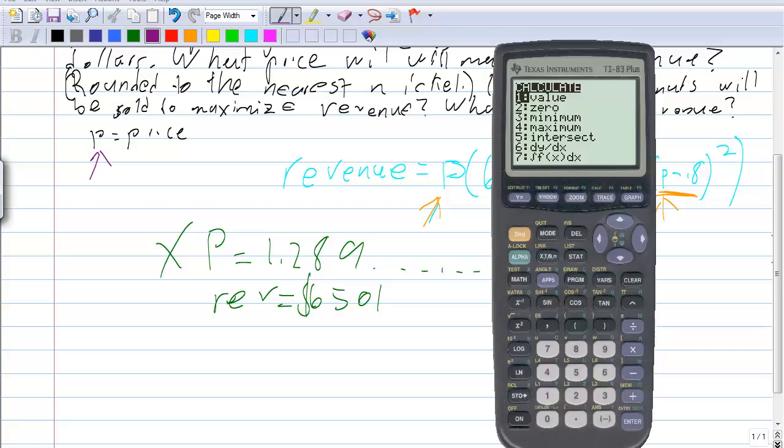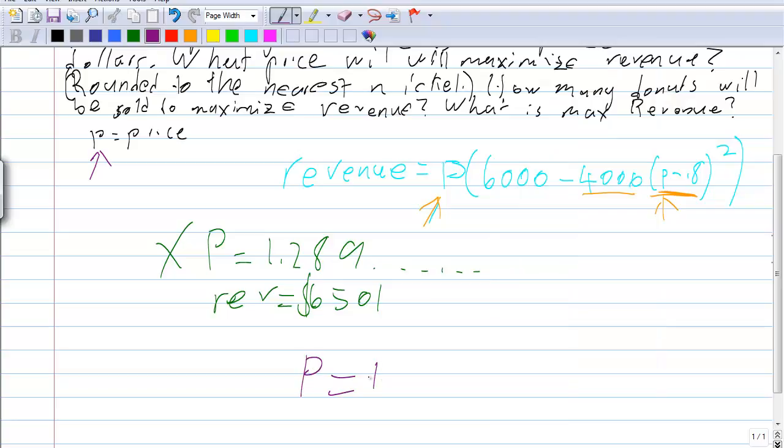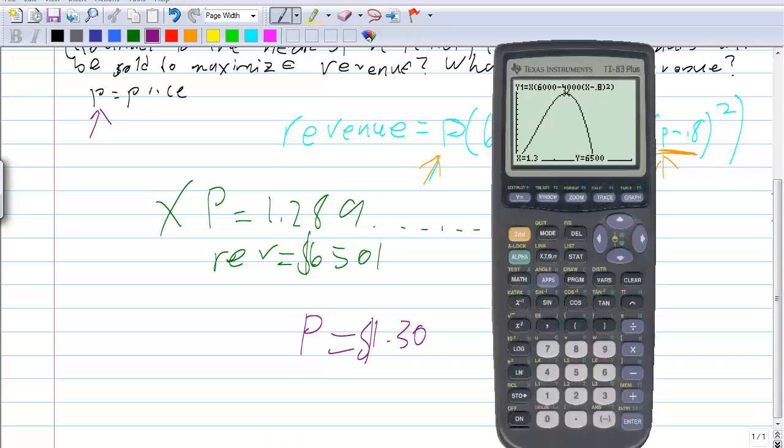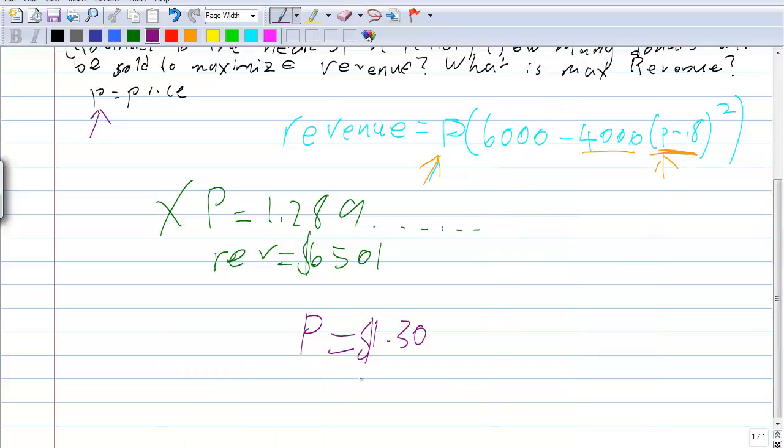We're going to go value. And this is just easy so you can set it up there. X equals 1.3. And then this is what the equation would be like if we rounded it to the max. So now, P equals $1.30. And then from that, the revenue changes. Now the revenue is $6,500 bang on.